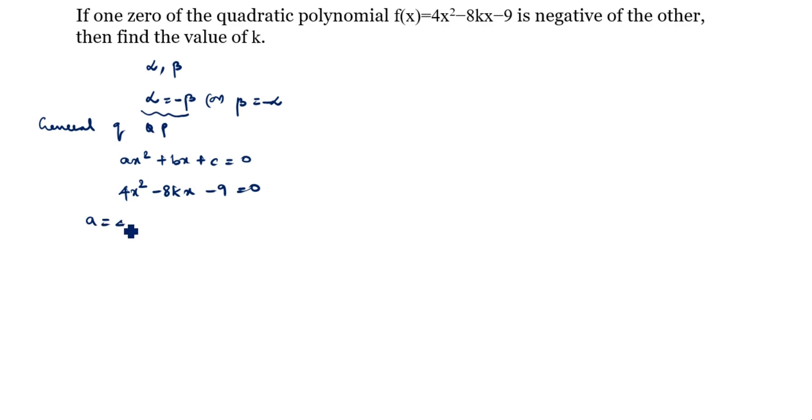What is the a value? a = 4. b = -8k. c = -9.